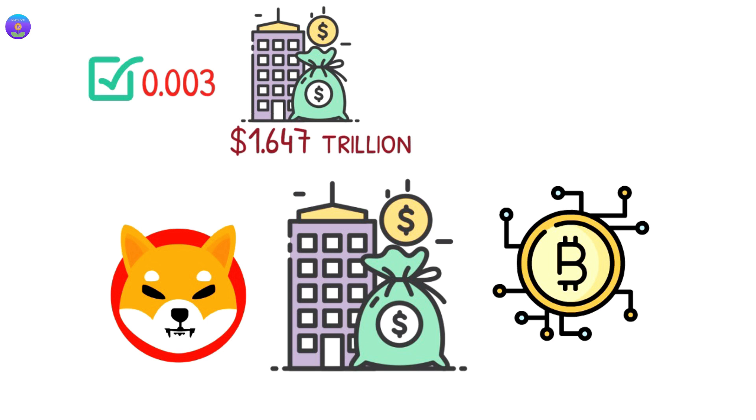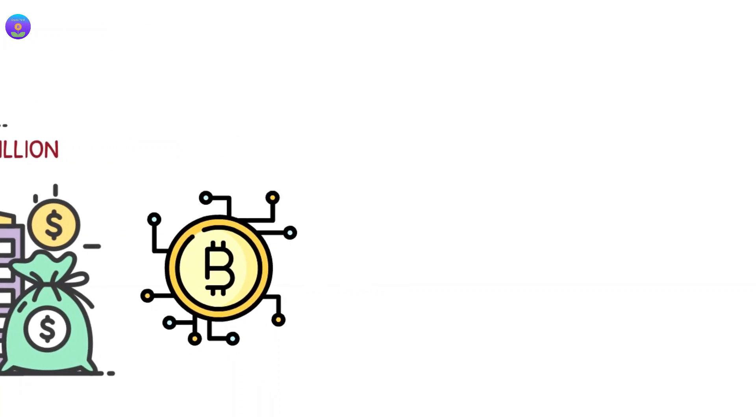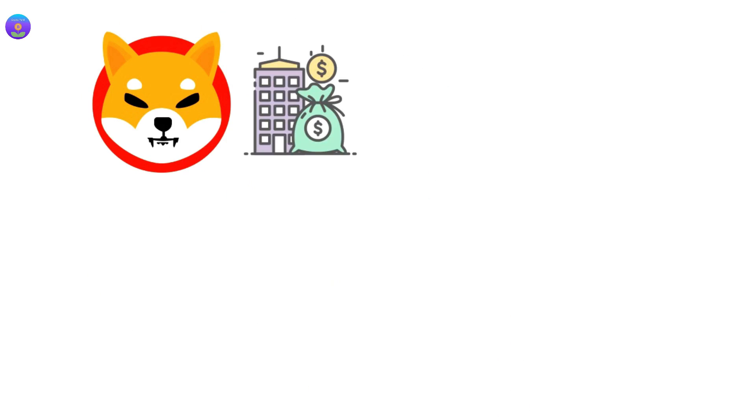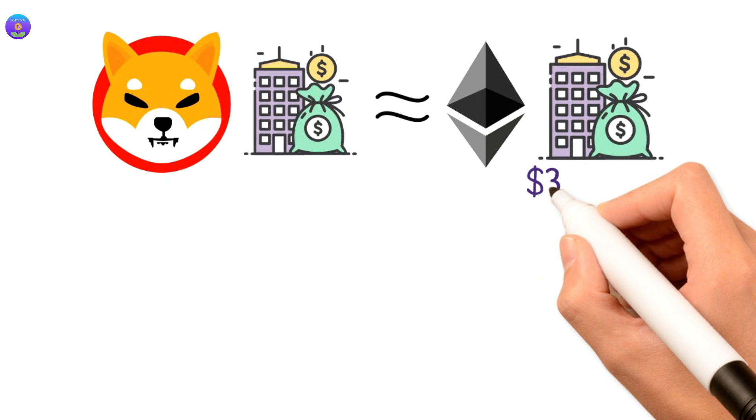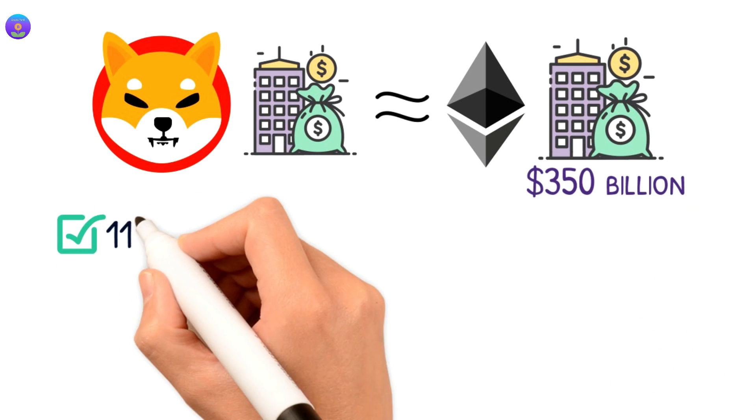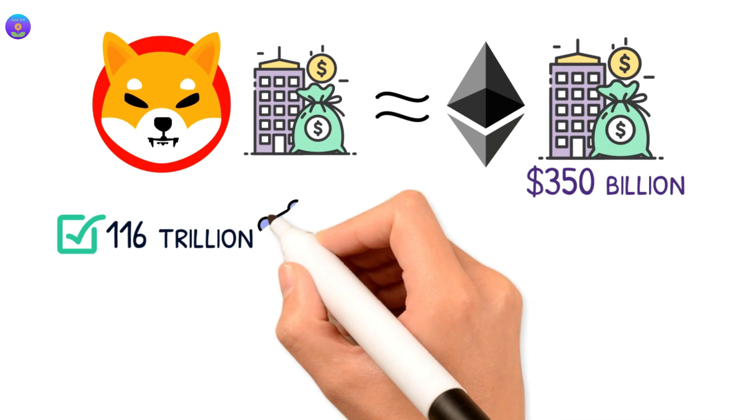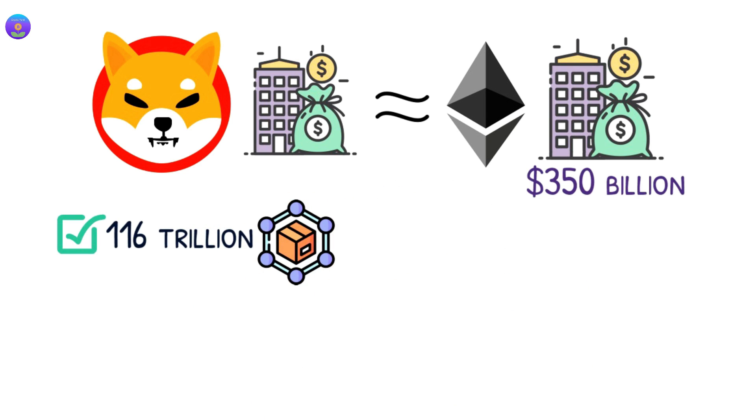Which is difficult to happen but not impossible. If we match Shiba's market cap with the Ethereum market cap which is around 350 billion, then we need around 116 trillion in the circulating supply. This means we need to burn 93.7% of the circulating supply.